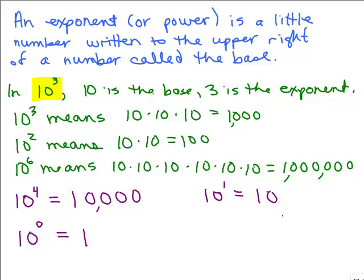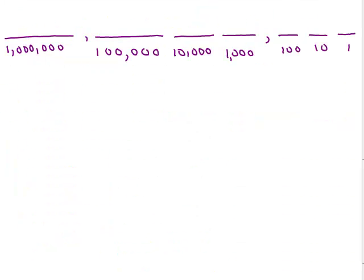So if you haven't learned about exponents before, this is the basic definition when you're taking 10 to some whole number like 0, 1, 2, 3, 4, 5, 6. There's a lot more to it that you may learn in other sections of arithmetic or pre-algebra. So: 10 is the same as 10 to the 1st power; 100 is 10 squared, or 10 to the 2nd power; then 10 cubed, 10 to the 4th, 10 to the 5th, and 10 to the 6th.